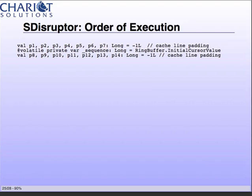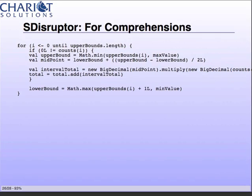Order of execution — earlier I was talking about defining variables before what you're using to make sure everything is in one cache line. If you were to move the second declaration of these values up in front of the volatile private var sequence, you'd see totally different behavior. This is putting it dead in the middle of a cache line.